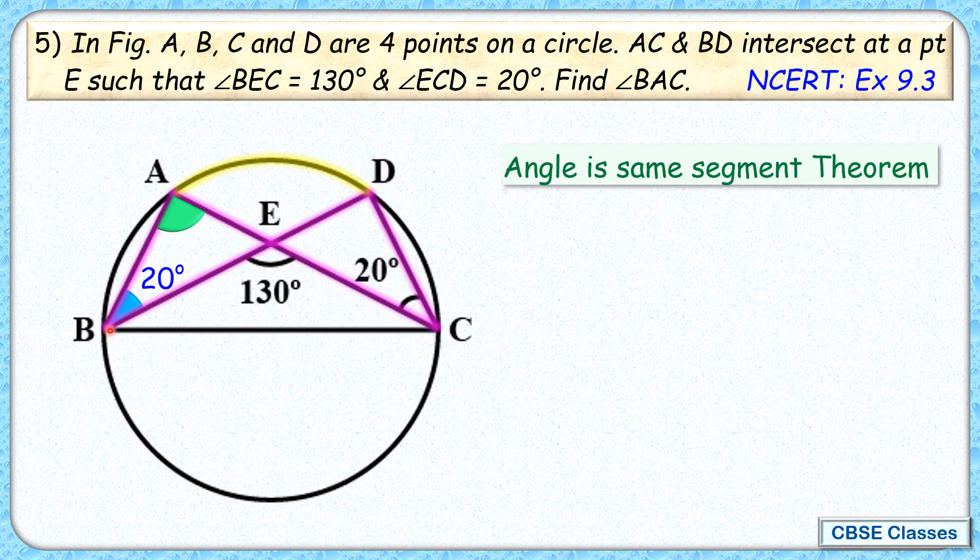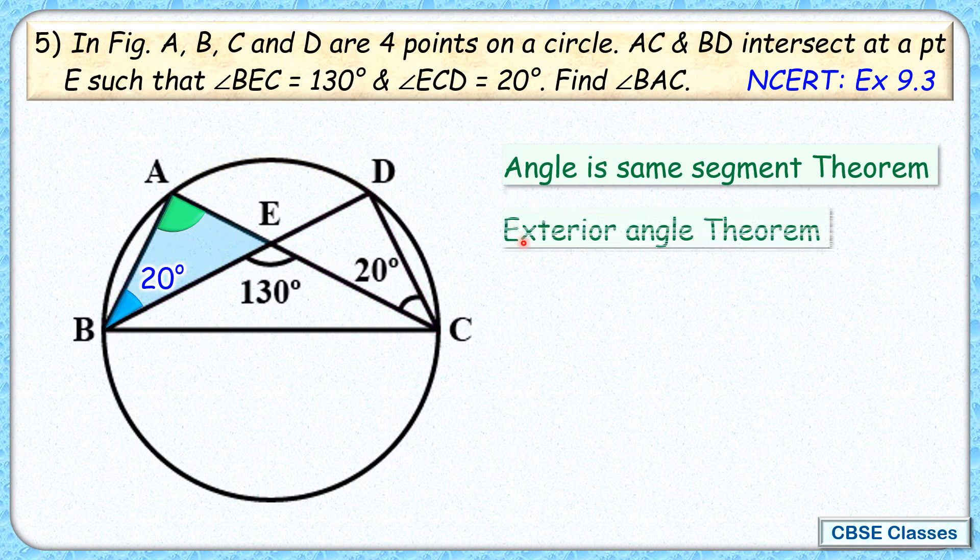Now if we check triangle BAE, we can apply the exterior angle theorem. This angle is an exterior angle which equals the sum of the opposite interior angles.